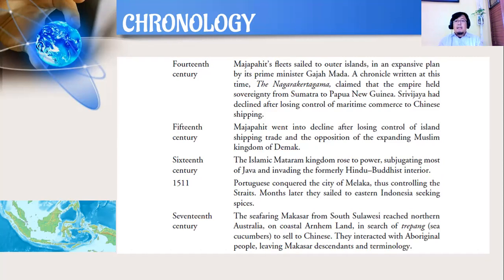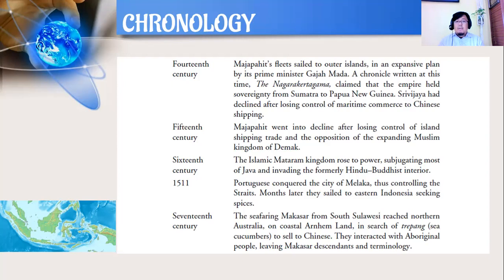14th century: Majapahit's fleet sailed to outer islands in an expansive plan by its Prime Minister Gajah Mada. A chronicle written at this time, the Nagarakretagama, claimed that the empire held sovereignty from Sumatra to Papua New Guinea. Sriwijaya had declined after losing control of maritime commerce to Chinese shipping. In the 15th century, Majapahit went into decline after losing control of island shipping trade and facing the opposition of the expanding Muslim kingdom of Demak.